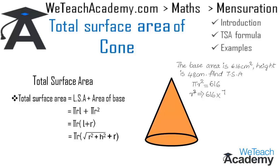Simplifying: 22 × 28 = 616, so r² = 196, which gives r = √196 = 14 cm. The given height h = 48 cm and the radius r = 14 cm.